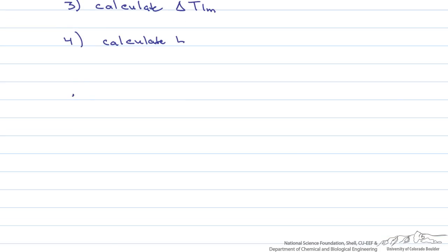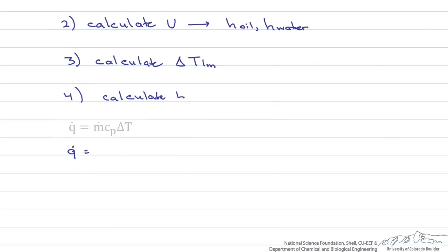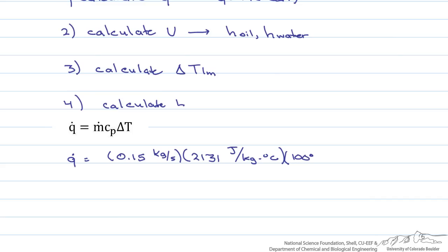Let's start with q̇. We're given the mass flow rate and heat capacity of the oil, as well as the delta T. So q̇ equals 0.15 kg/s times 2,131 J/(kg·°C) times (100°C − 60°C), giving a heat transfer rate of 12,786 watts.